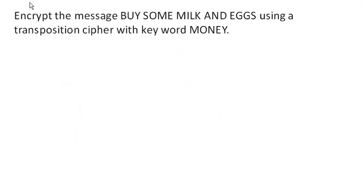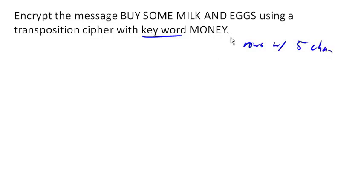One way to make a transposition cipher more complicated is to pick the columns in a different order using a keyword. We'll use the keyword 'money,' which tells us two things: first, rows will be five characters long because 'money' has five letters; second, it tells us the order in which to read the columns, based on the alphabetical order of the letters in 'money.' E comes first alphabetically, then M, N, O, Y — giving us the column reading order.